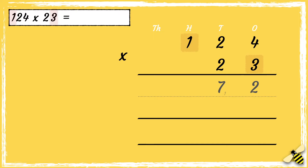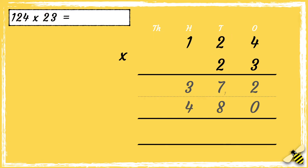Now we need to multiply 3 by 100 — 3 times 1 is 3. Next, we multiply 2 tens by 4. As we're multiplying the number by 2 tens, we need to put zero as a placeholder in the ones column. With zero as our placeholder, we can multiply: 2 times 4 is 8. Then 2 tens multiplied by 2 tens — 2 times 2 is 4. Then 2 tens multiplied by 100 — 2 times 1 is 2.